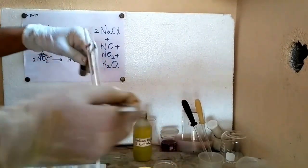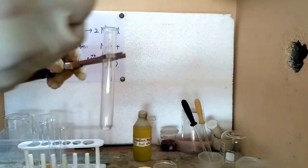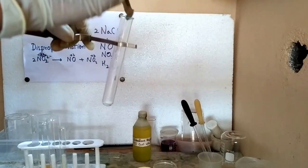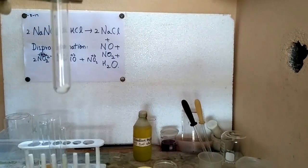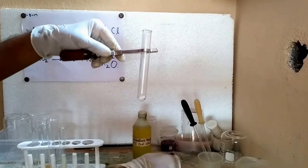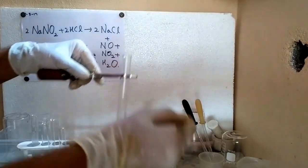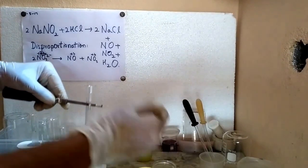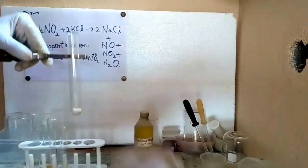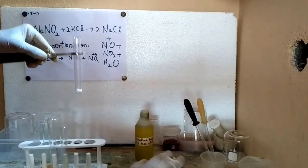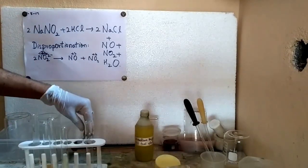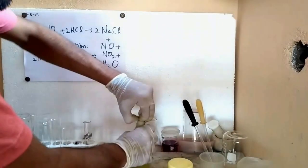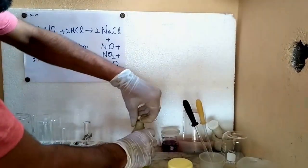Some sodium nitrite is taken into a test tube with the help of a spatula, and then you need to take some hydrochloric acid with the help of a dropper.